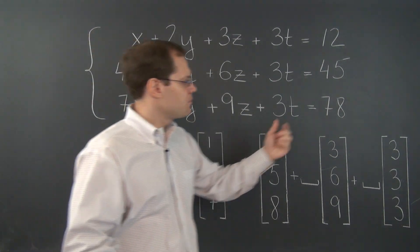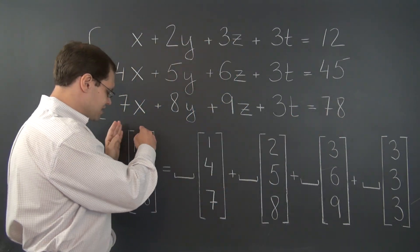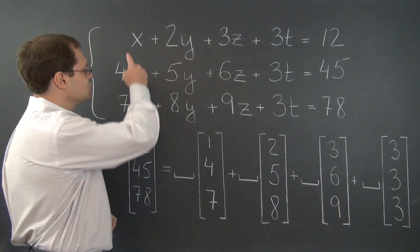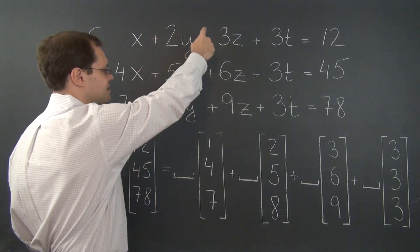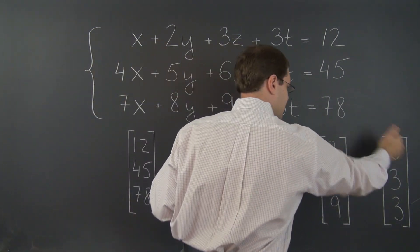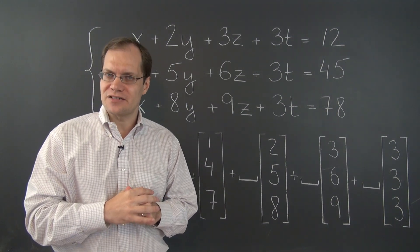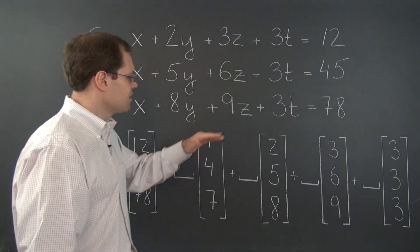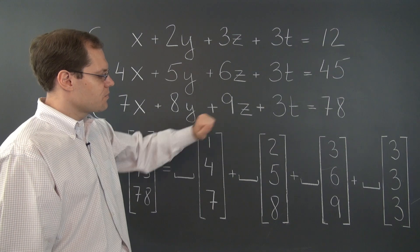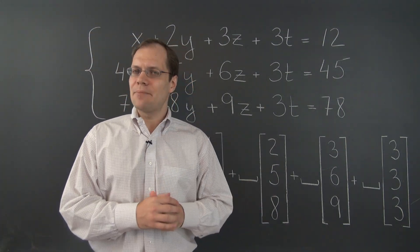So here's what I've done. I took the right-hand side from the system of equations and turned it into the target vector. And then I took the coefficients that correspond to the same unknown and turned them into these four vectors in R3, the decomposition vectors. And I claim that to solve this system is equivalent to solving this decomposition problem.